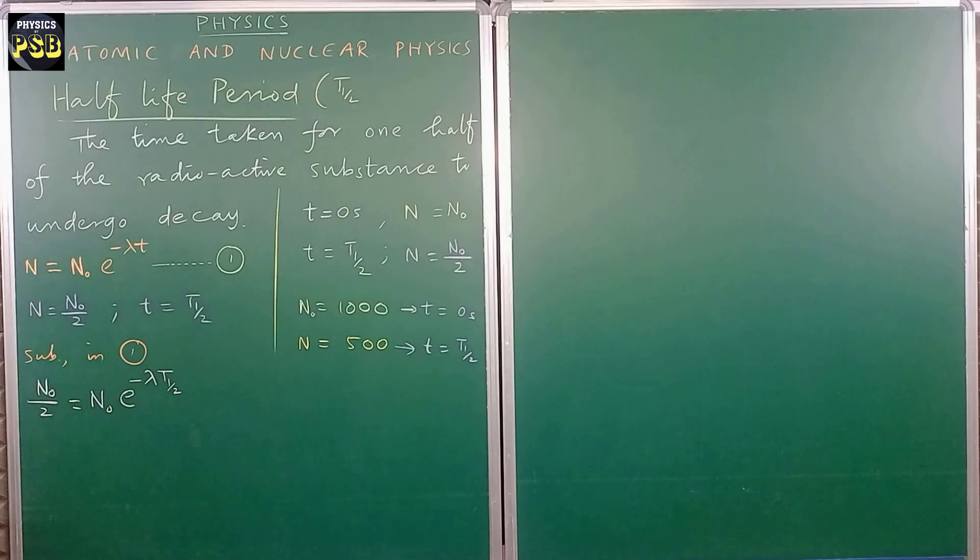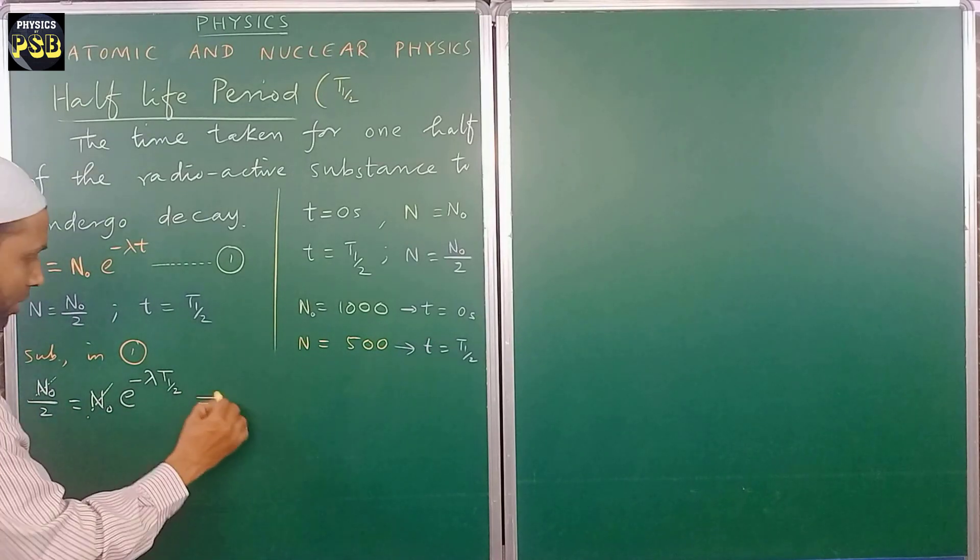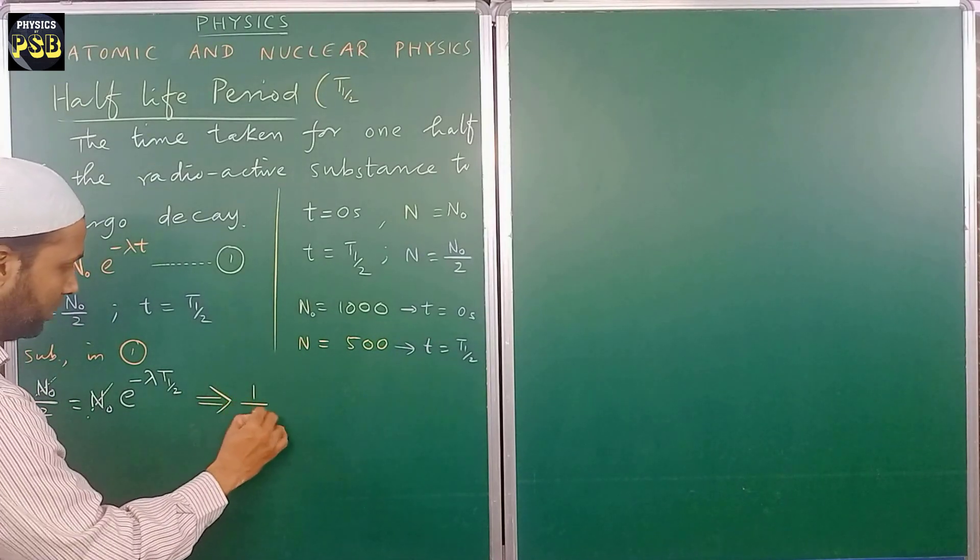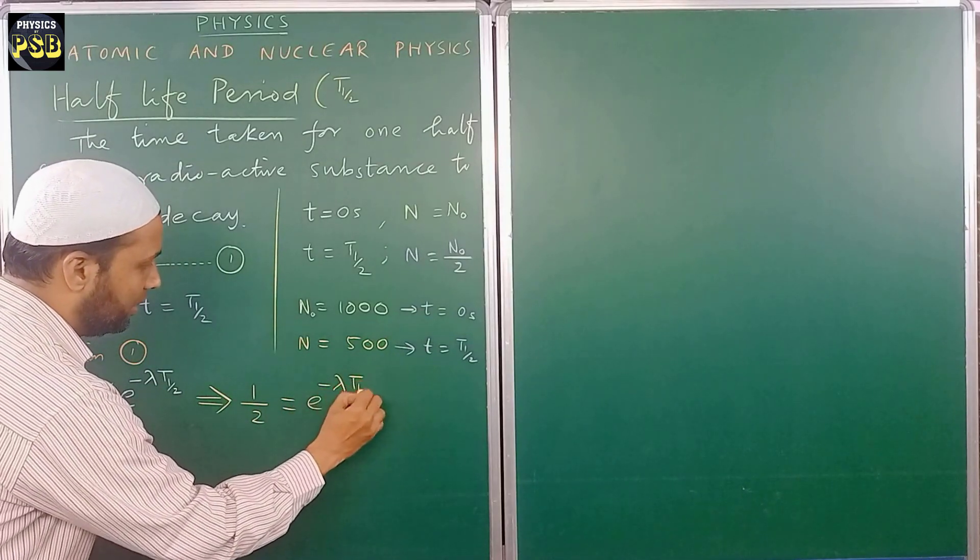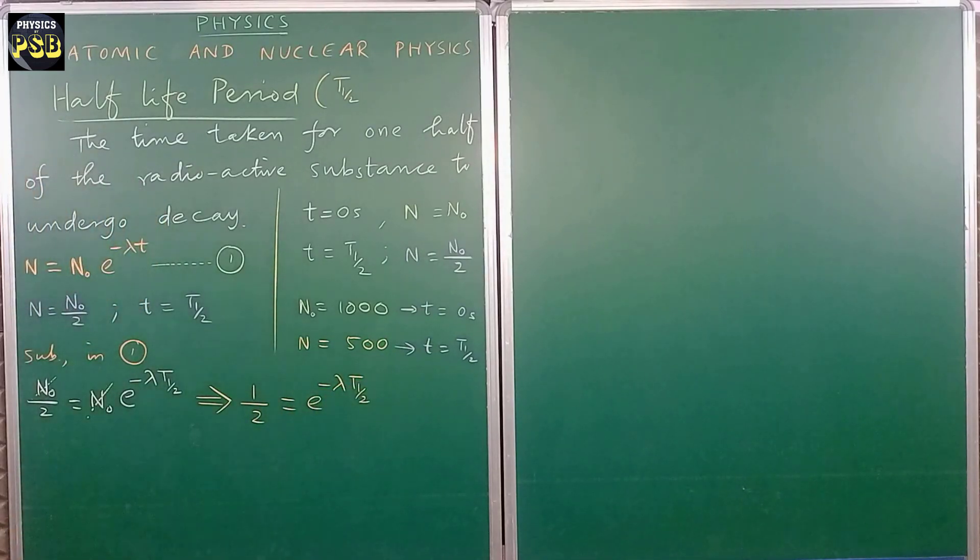Now both sides, the common terms are cancelled. N naught can get cancelled. And what we obtain is nothing but 1/2 equals e to the power minus lambda t half. So here I take the reciprocal of this.